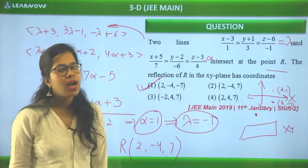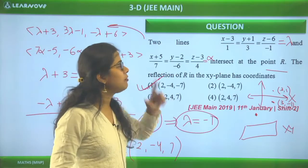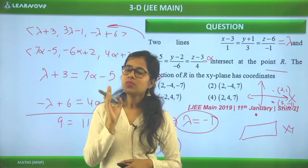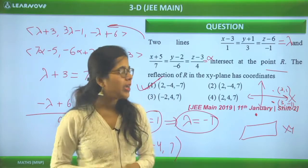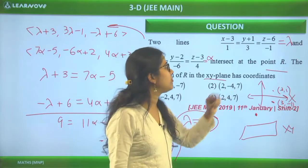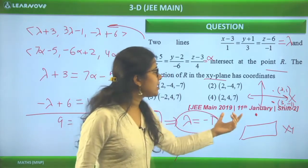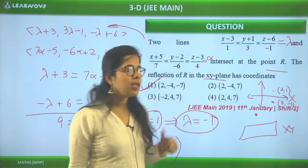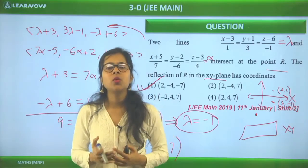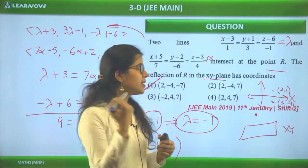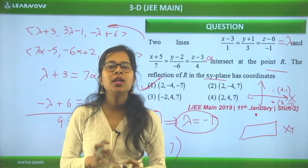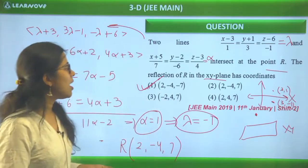This is a simple and quick question. Questions like these save us time in the exam so that we can spend more time on the lengthy ones. The approach is clear: find the intersection point using parametric forms, set coordinates equal, solve for the parameters, then apply the simple reflection rule.